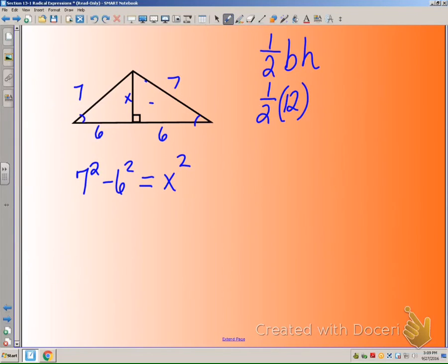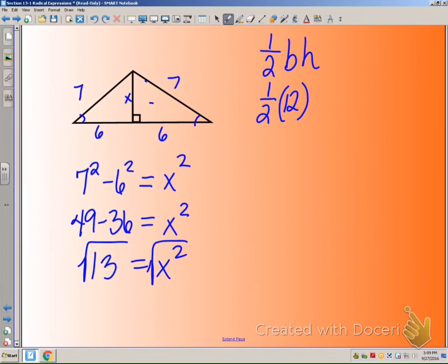I'm going ahead and doing the process in my head a little. So I've got 49 minus 36 equals x squared, 49 minus 36 is 13, so 13 is equal to x squared. In order to get the x by itself, I want to take the square root of both sides, and I know that this radicand can't be simplified. The only factors of 13 are 1 and 13, so I'm going to keep it as the square root of 13.